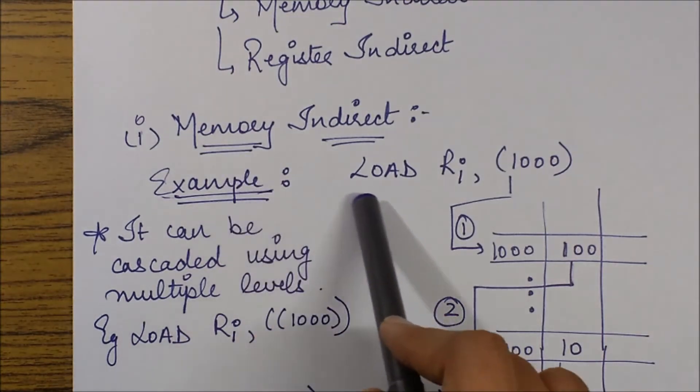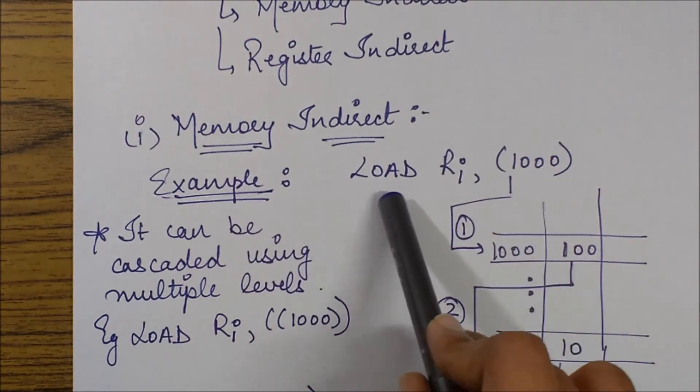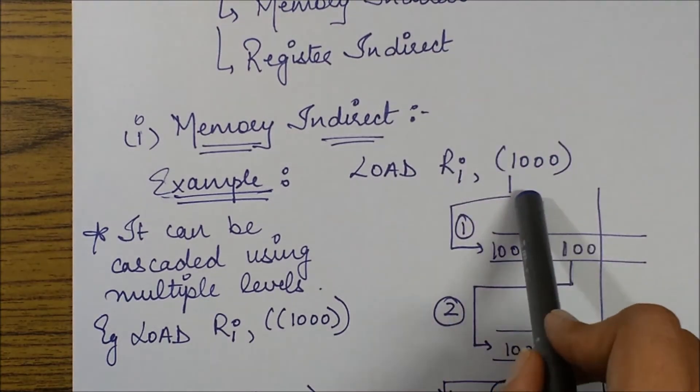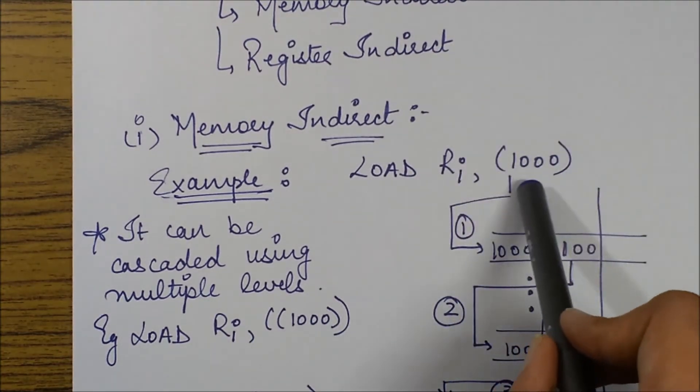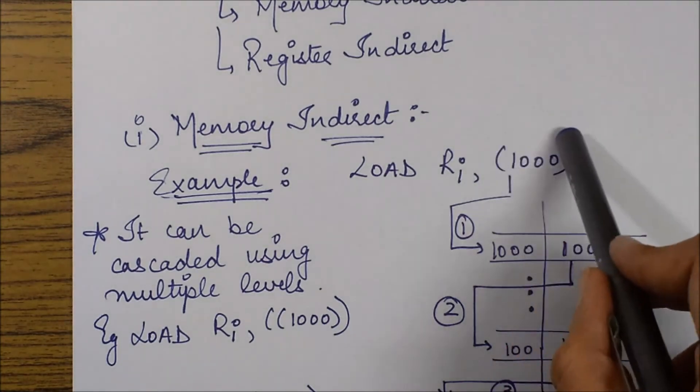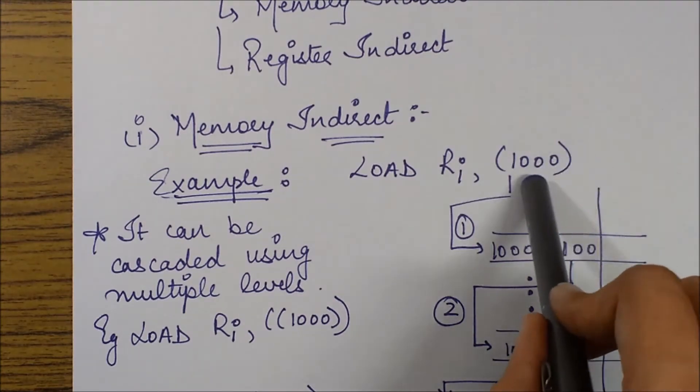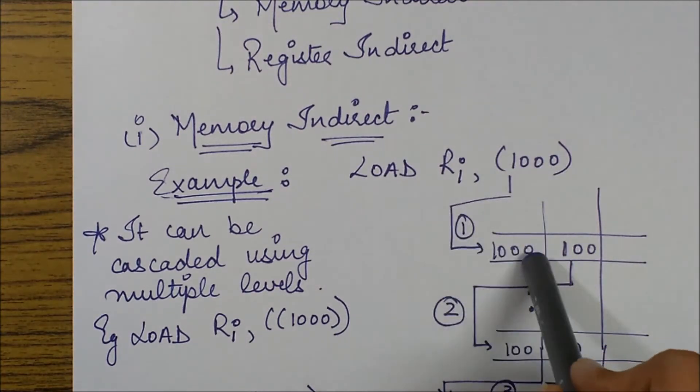The basic syntax comes with this example. It says load Ri, (1000) specified within these curve braces. So now this 1000 basically represents a memory address. And since it is embraced within these curve braces, it specifies that this is an indirect address. So we'll have to go to this address first,